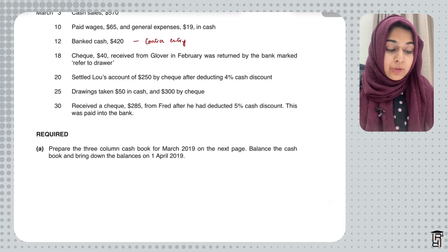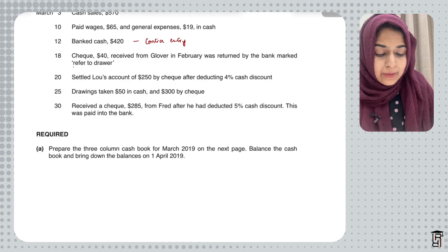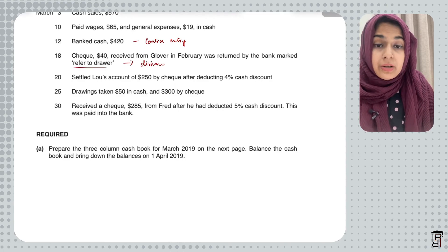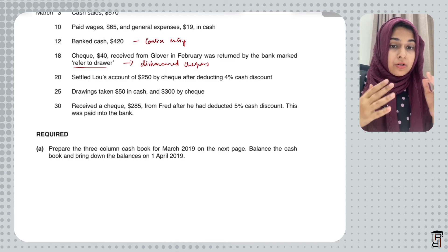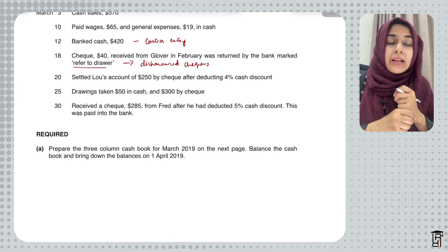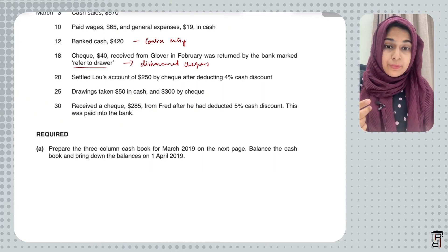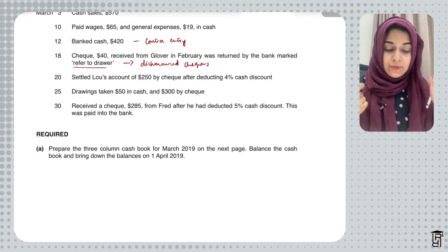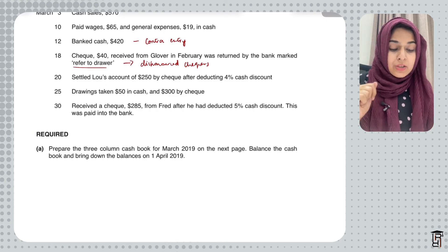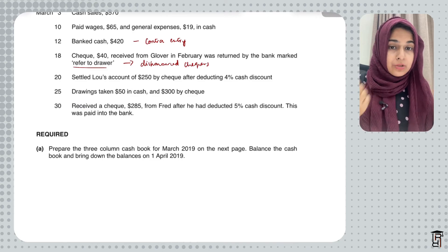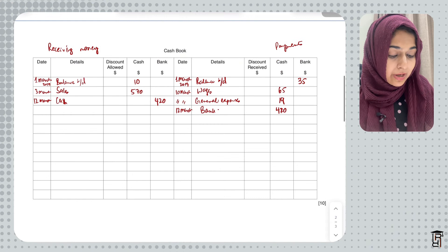On 18th March, a check of $40 received from Glover in February was returned by the bank marked 'refer to drawer,' which means it's a dishonored check. Glover did not have enough money in his bank account, so the bank returned the check. I now record this on the credit side of the cashbook: I write Glover, dishonored check in brackets, and $40 in the bank column.